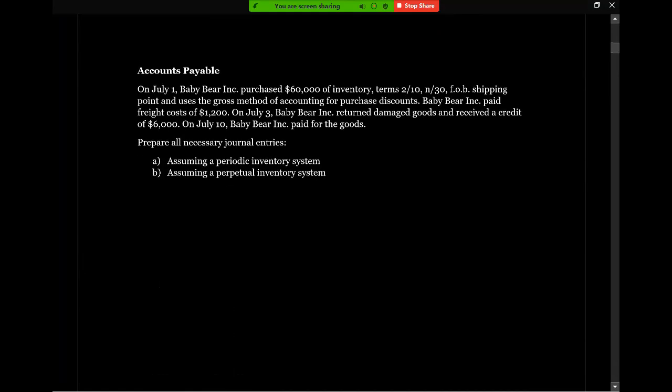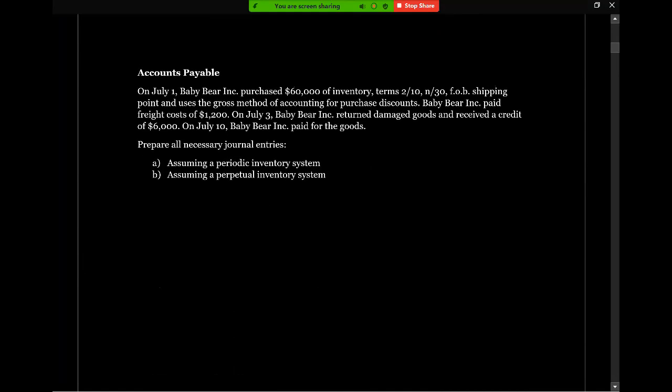Let's take a look at our first question. This question will cover accounts payable. On July 1st, Baby Bear Inc. purchased $60,000 of inventory, terms 2/10 net 30, FOB shipping point, and uses the gross method of accounting for purchase discounts.